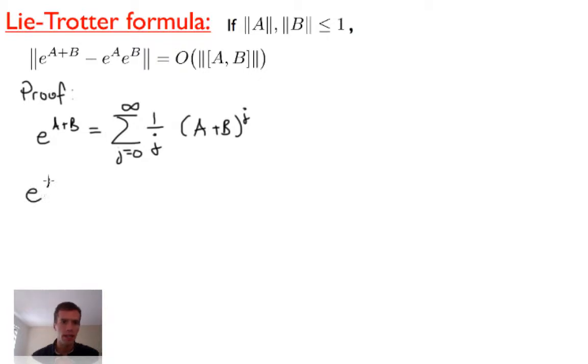In the second term, e^A times e^B, we use the same expansion for both terms and multiply them. So we get sum over K from 0 to infinity of A^K over K factorial, times sum over L from 0 to infinity of B^L over L factorial. If you collect terms according to the total power of A and B, you get sum over J from 0 to infinity of the sum over K from 0 to J of A^K times B^(J-K). The coefficient should be 1 over K factorial from the first term and 1 over (J-K) factorial from the second term.